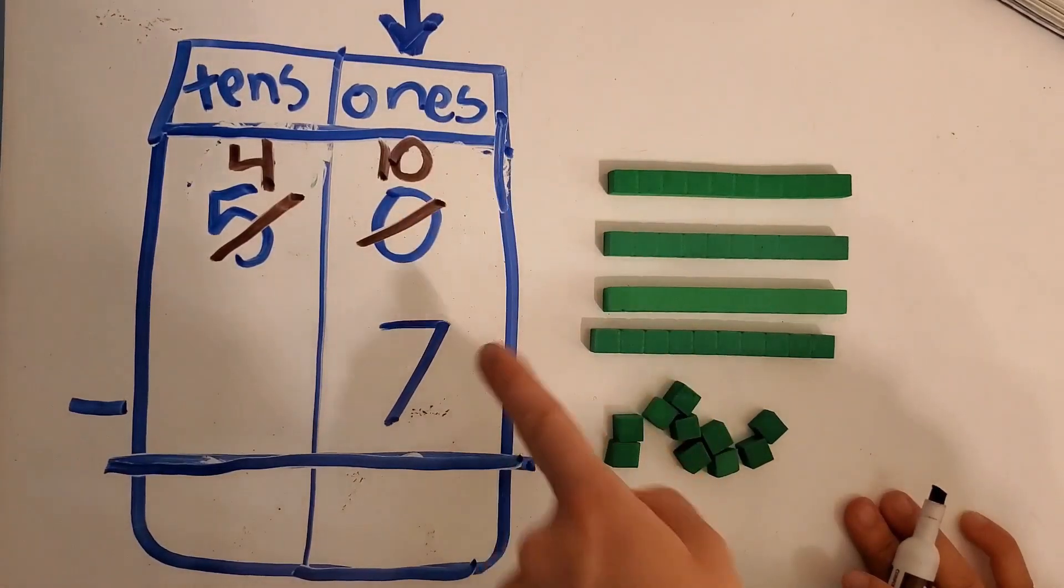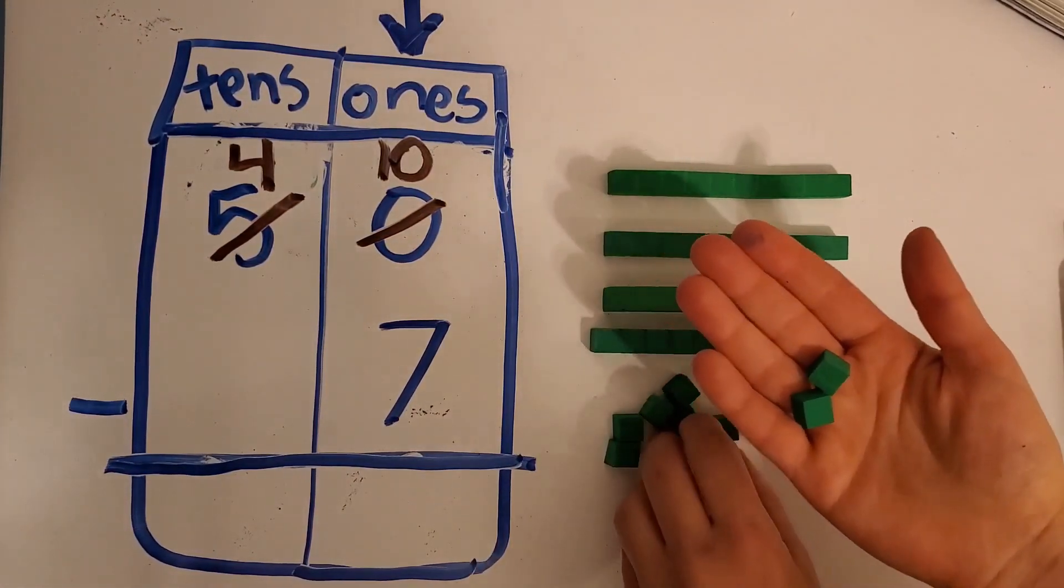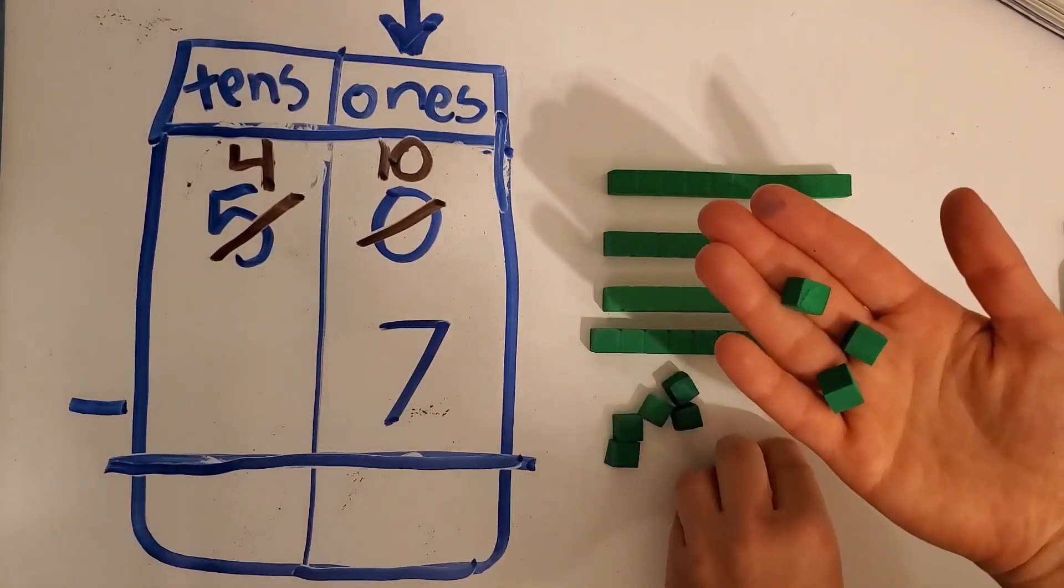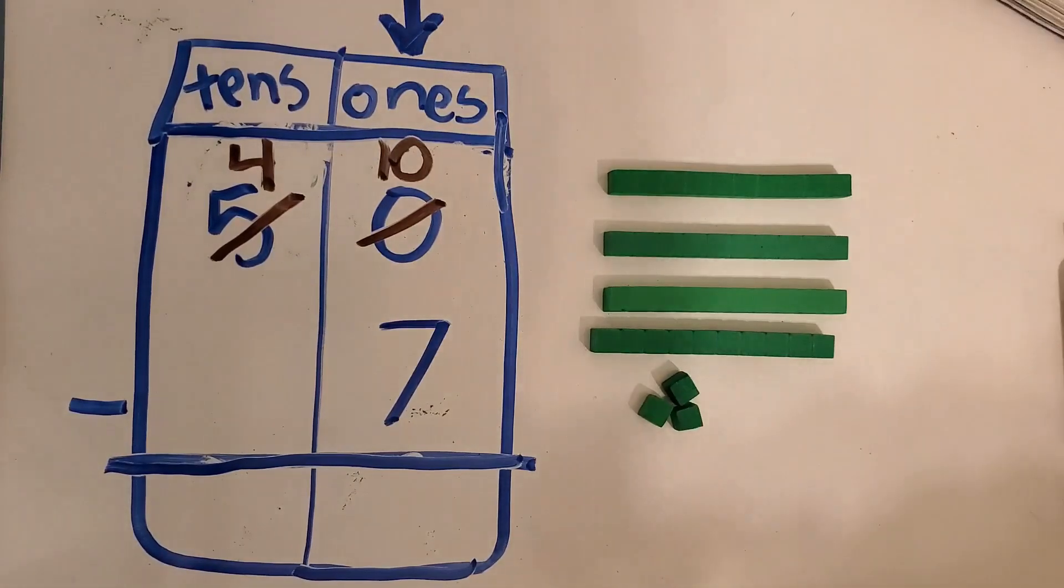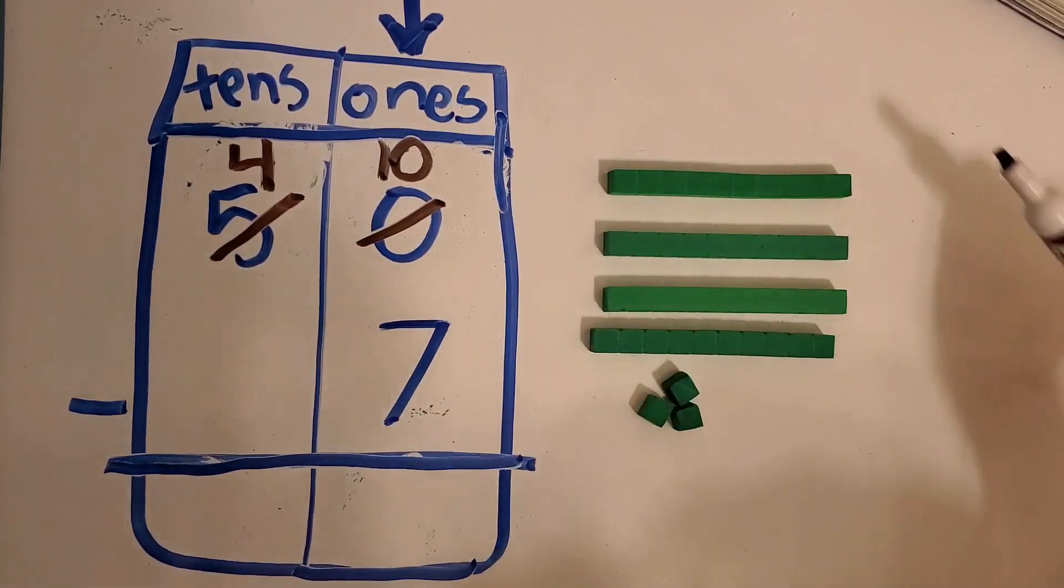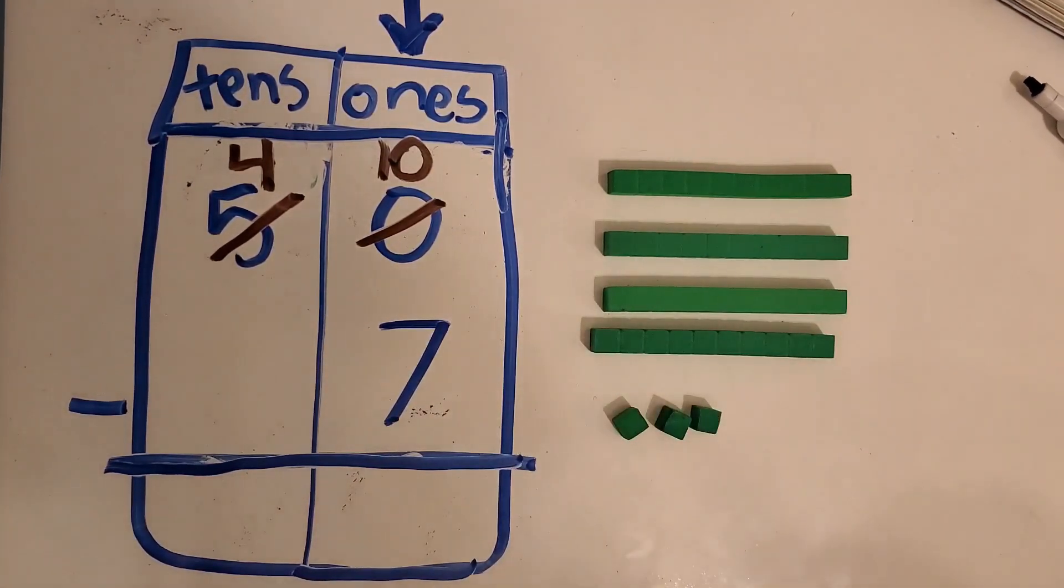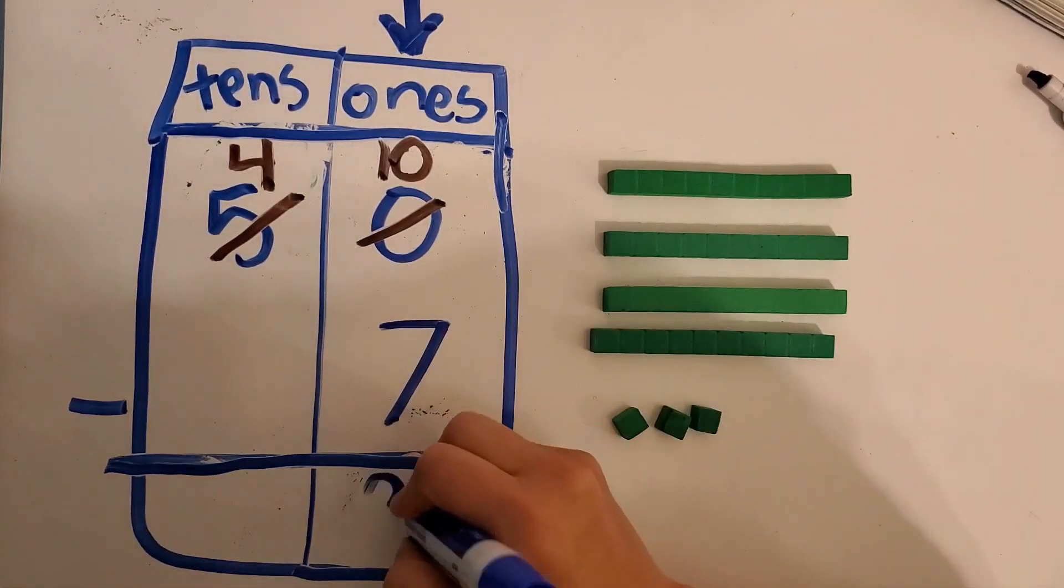So ten minus seven. Let's take away seven. One, two, count with me, three, four, five, six, seven. So ten minus seven, how many ones do I have left? Three. So ten minus seven equals three.